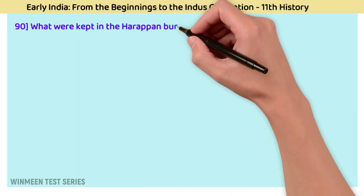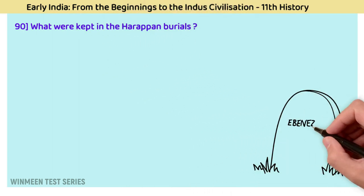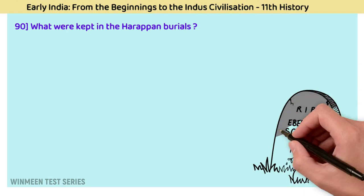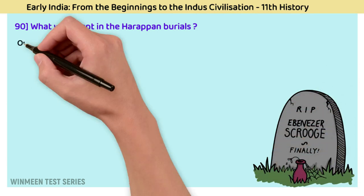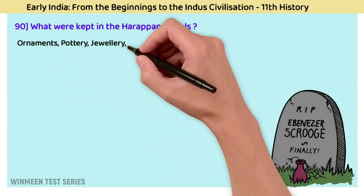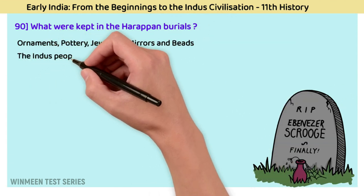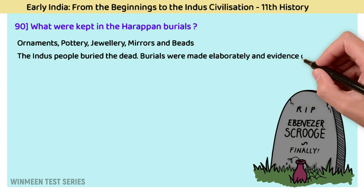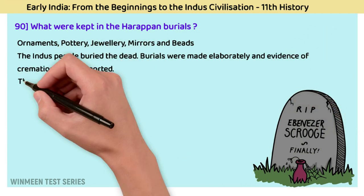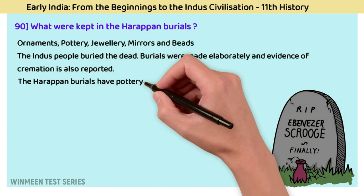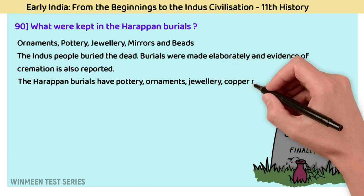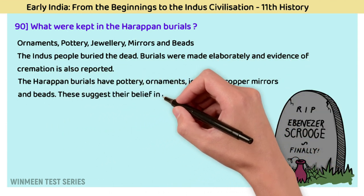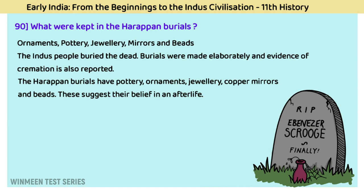Question 90: What was kept in Harappan burials? The answer is ornaments, pottery, jewellery, mirrors, and beads. The Indus people buried the dead, and burials were made elaborately; evidence of cremation is also reported. Harappan burials contain pottery, ornaments, jewellery, copper mirrors, and beads. These suggest their belief in an afterlife.